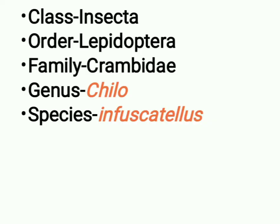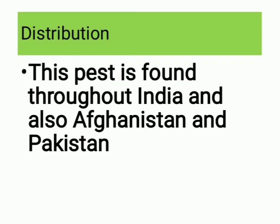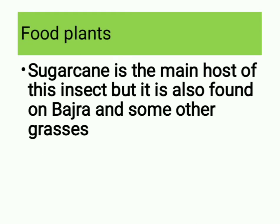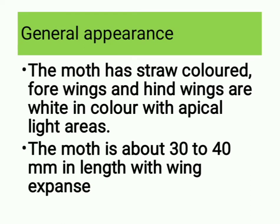The class of Chilo infuscatellus is Insecta, order Lepidoptera, family Crambidae, genus Chilo, species infuscatellus. Distribution: this pest is found throughout India and also in Afghanistan and Pakistan. Food plants: sugarcane is the main host of this insect, but it is also found on bajra and some other grasses.